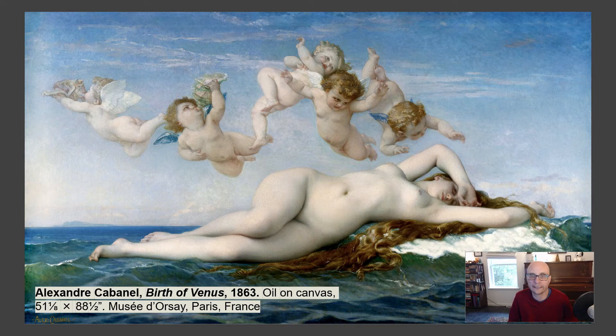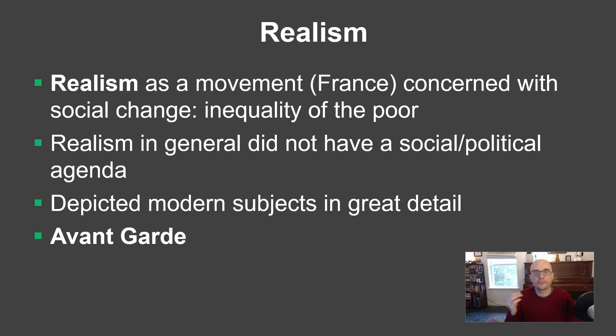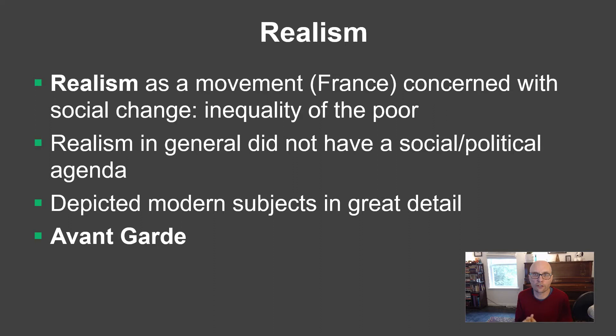Notice the word 'real,' because there's a movement that begins in the 1840s, 50s, and 60s called Realism. It begins in France and is concerned with social change and the inequality of the poor. Although it didn't always have a social-political stance, it often did, and certainly it was about real life and everyday struggles — that's why we call it Realism. This art doesn't look real in a photographic sense, but it's real in the sense that it's about everyday people's lives.